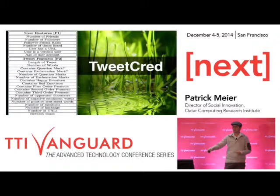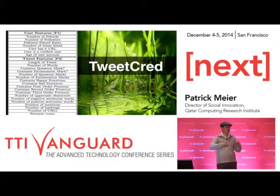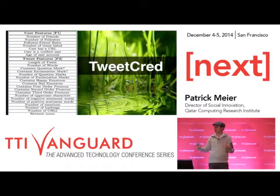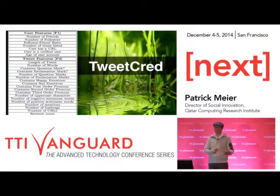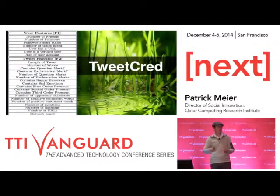One last thing I'll say about TweetCred is it's got machine learning built into it as well. Once you've downloaded this on Chrome and you're looking at the tweets coming in, you can correct TweetCred. If it scores a tweet as being very low credibility and you know for a fact that it's very high credibility, you can correct it and say this should be seven stars.